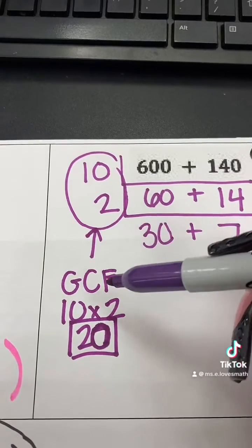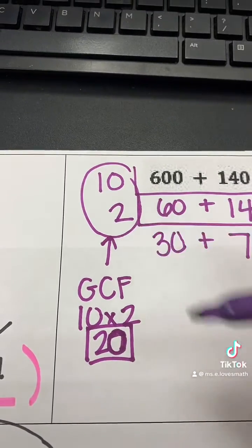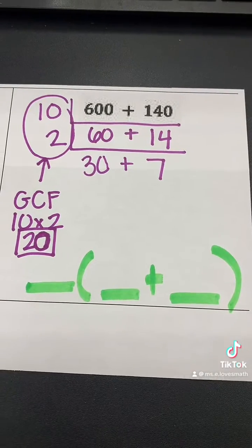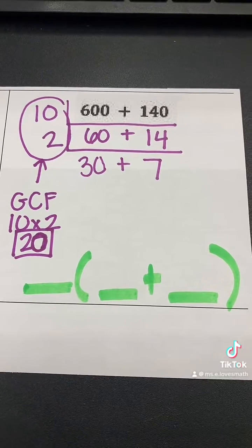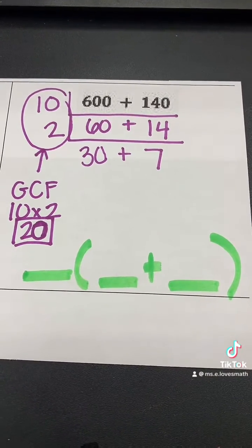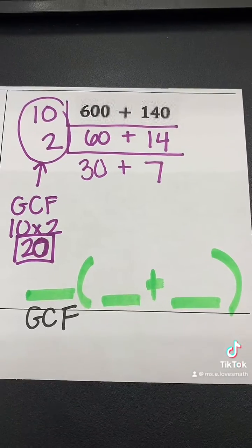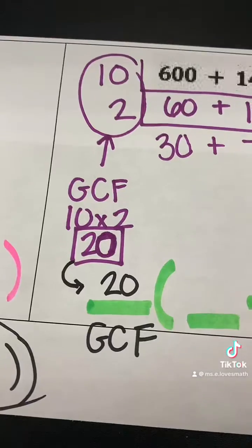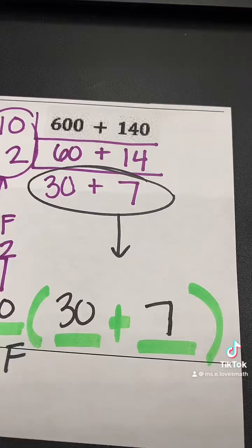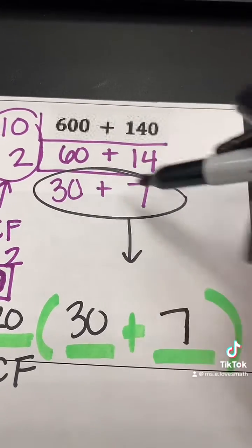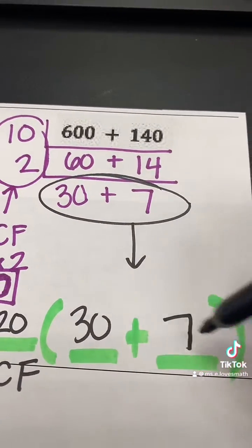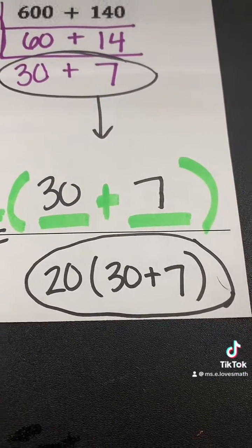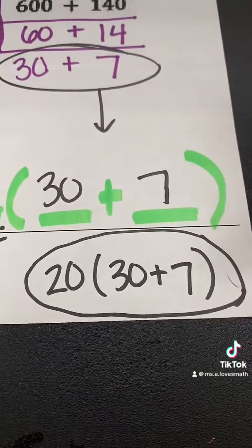We need to find our GCF, which is 10 times 2. We multiply the two numbers they have in common, and that's going to be 20. And we need to rewrite an equivalent expression that uses the distributive property and the GCF. We will use the GCF as the number outside of the parentheses. Our GCF is 20. And we will use our two numbers that are added together here at the bottom as our numbers that go inside of the parentheses. Our final equivalent expression is 20 parentheses 30 plus 7.